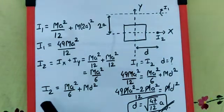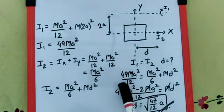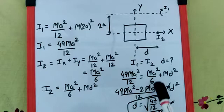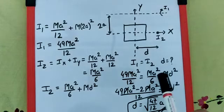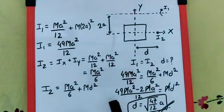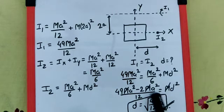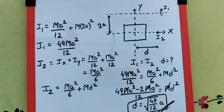Now we got the value of I1, we got the value of I2. We need to equate them because they are equal as given. So 49MA square by 12 equals MA square by 6 plus MD square. Taking MA square by 6 on this side and multiplying dividing this by 2, we get 49MA square minus 2MA square by common 12, which is 47MA square by 12. The square root of that after cancelling M, we get root of 47 by 12 times A as the final answer.